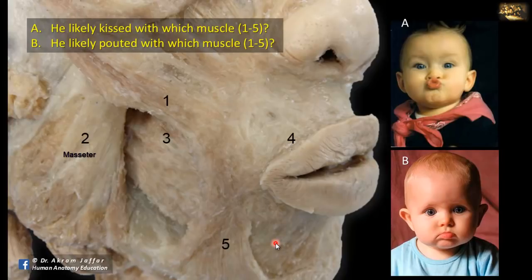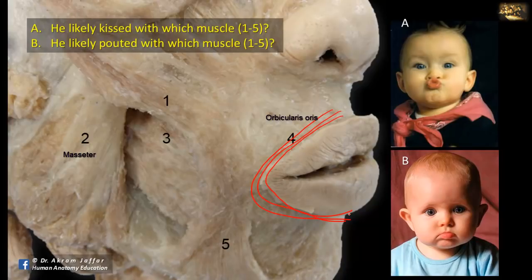The sphincter mechanism is formed by muscle 4, which is the orbicularis oris muscle. It lies within the lips and encircles the mouth and is inserted into the mucous membrane of the lips. Its tone closes the lips and more powerfully protrudes them, as in whistling or in kissing like in the baby shown in A. So for A, it's muscle 4, orbicularis oris.